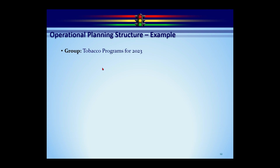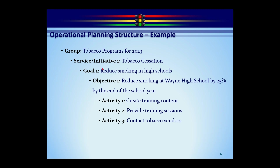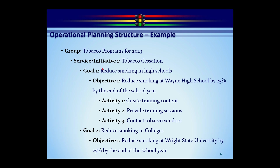Putting it all together in the actual plan: the group is Tobacco Programs 2023; the initiative is Tobacco Cessation; one goal is Reduce Smoking in High Schools; under that goal, one objective is Reduce Smoking at Wayne High School by 25% by end of school year; and the activities to get there are: create the training content, provide the training sessions, and contact the tobacco vendors.